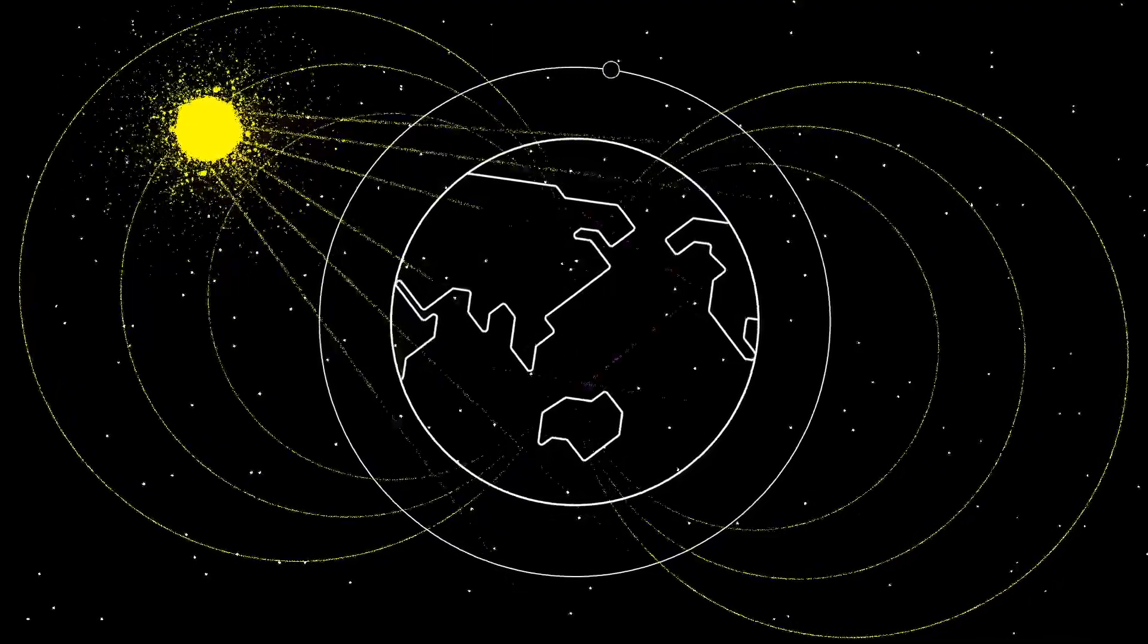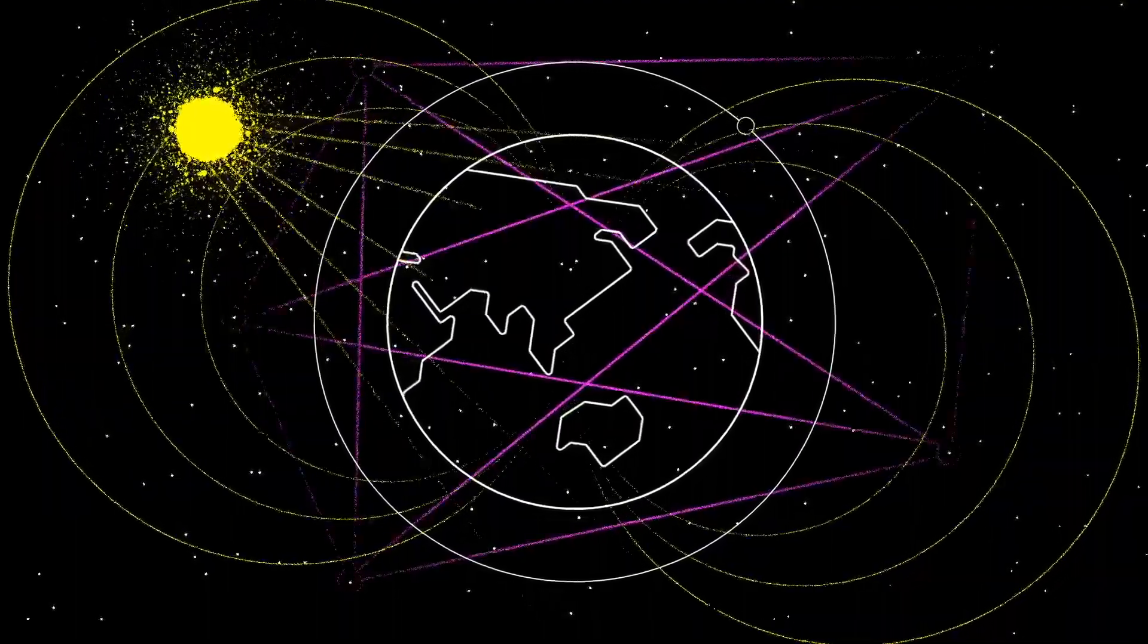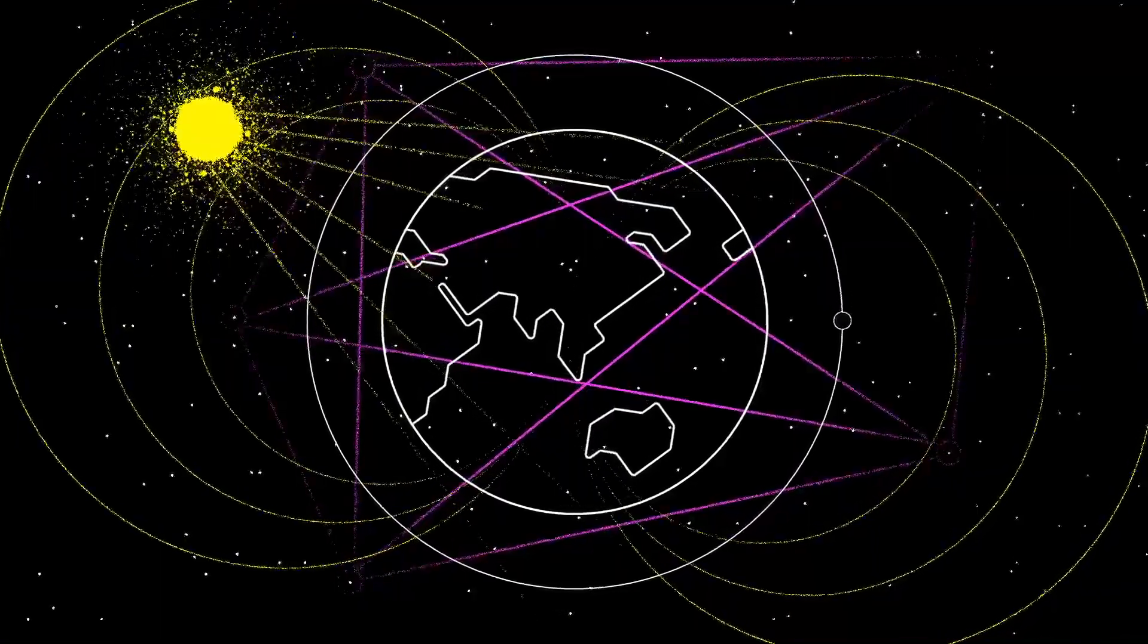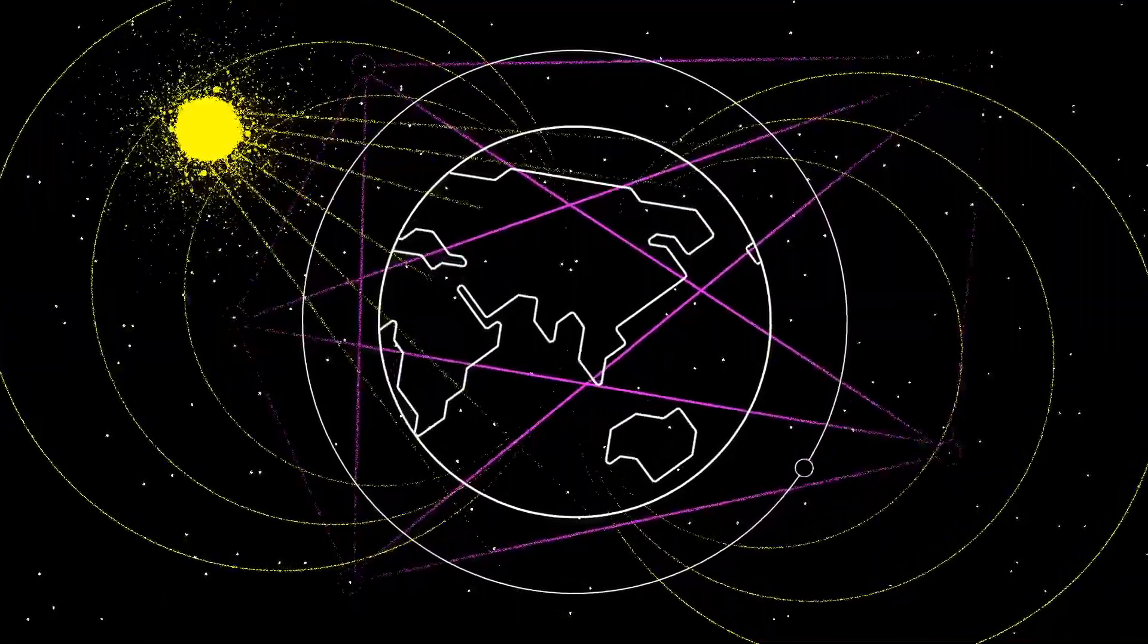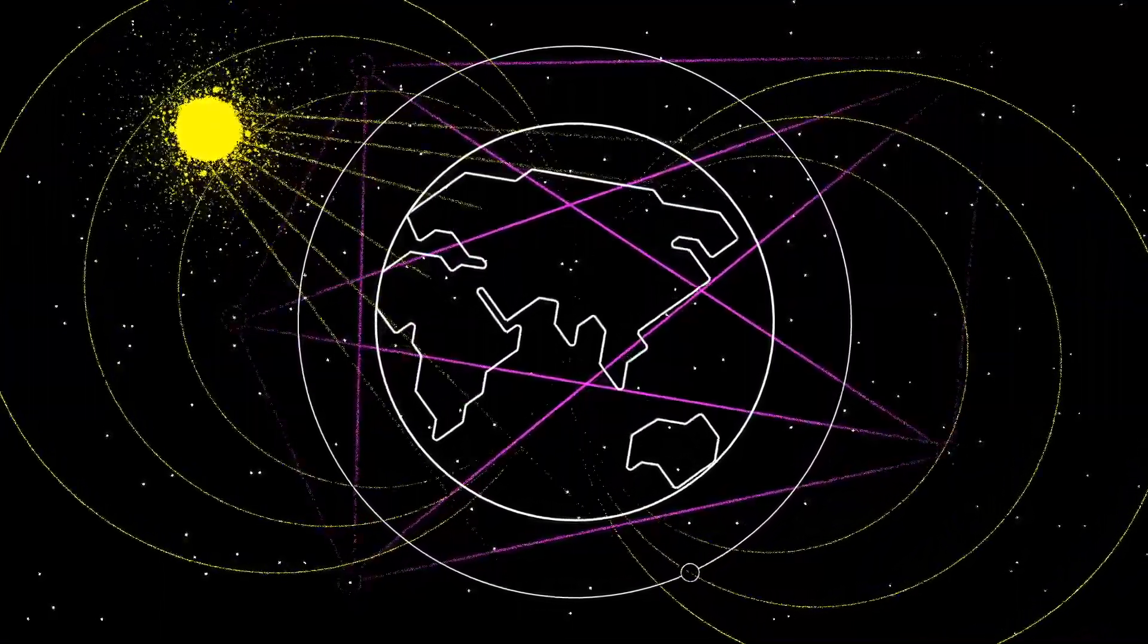This means we can create a map of the star field that surrounds Earth, and we can reference it to calculate exactly where a camera mounted on the satellite is pointing.